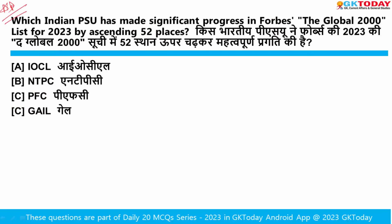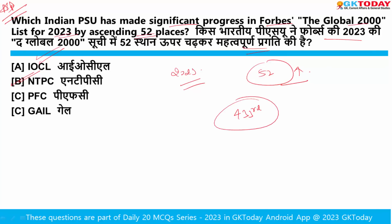Which Indian PSU has made significant progress in the Forbes Global 2000 list for 2023 by ascending 52 places? The answer is NTPC, India's largest power generation company. The company went up 52 positions and its final rank is now 433. In 2022, its rank was 485.